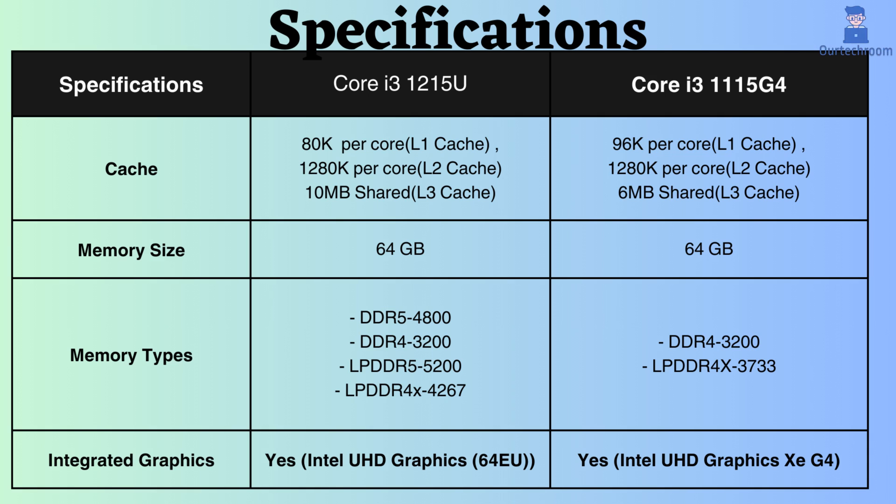Both of them support up to 64 GB of RAM. The Core i3-1215U supports DDR4, DDR5, LPDDR5, and LPDDR4, whereas the Core i3-1215G4 supports only DDR4 and LPDDR4. Additionally, the maximum memory frequency for the Core i3-1215U is higher than that for the Core i3-1215G4.